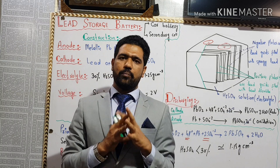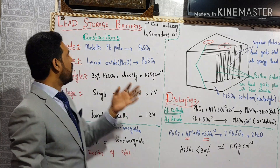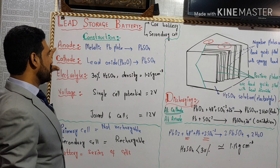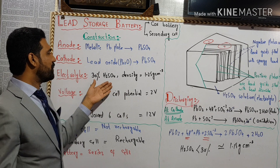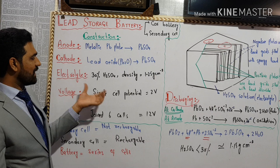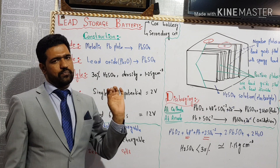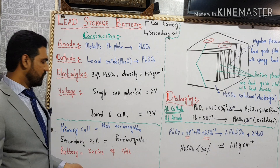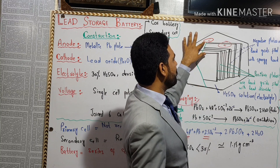In the name of Allah. You have read lead storage battery — this is a car battery and this is a secondary cell. It can be recharged. Its construction is made of metallic lead plates coated with lead sulfate at the anode, and cathode also coated with lead sulfate. The electrolyte is 30% sulfuric acid with a density of 1.25 gram per cm³. A single cell produces 2 volts, and six cells connected in series produce 12 volts. Primary cells are not rechargeable, while secondary cells are rechargeable.